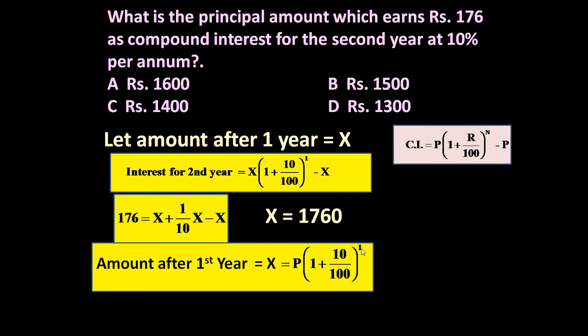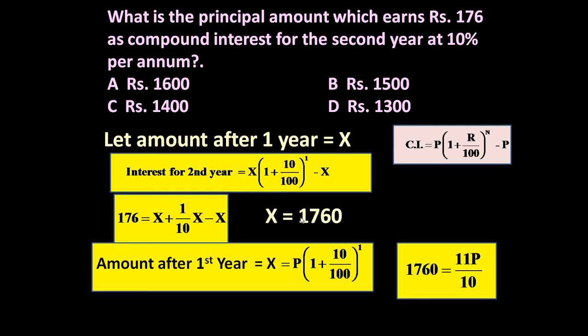Raised to the power N, where N is one year. X is 1760, so let us put all these values. 1760 is equal to 11 upon 10 into P. If we further simplify it, we get P is equal to 1600. It means if we invest rupees 1600 at 10% per annum, in the second year it will attract rupees 176 as compound interest.